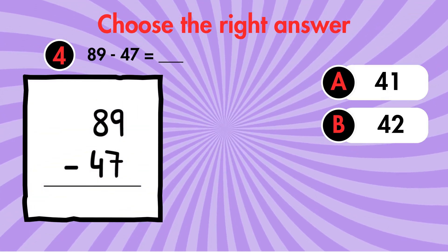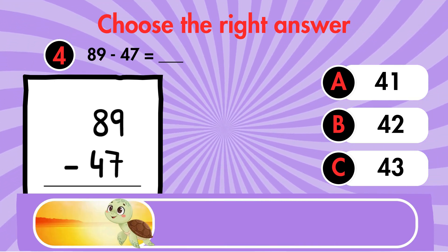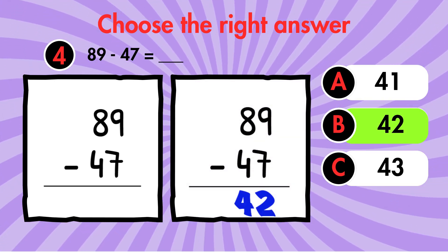Question 4. 89 minus 47 equals what? Answer 42.